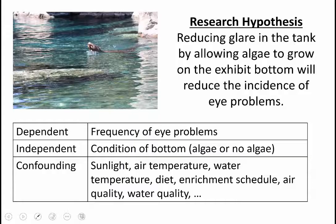The confounding variables in this case would be things like sunlight. If there's less sunlight, say it's a cloudy day, you would tend to have less glare also and hence lower eye problems according to this hypothesis. Air temperature has the potential to impact eye problems. Water temperature, diet, the enrichment activities the zookeepers do with the animals and the exercise, air quality might affect their eyes, water quality might affect their eyes.